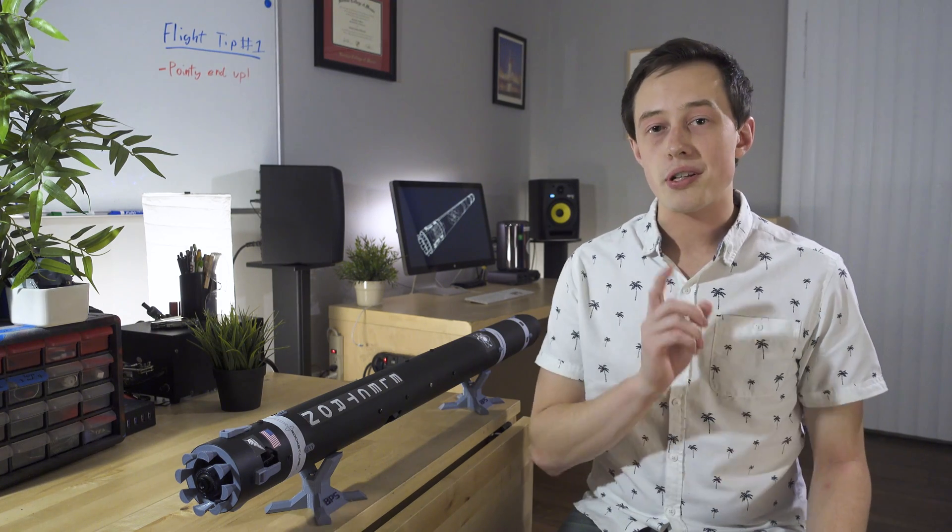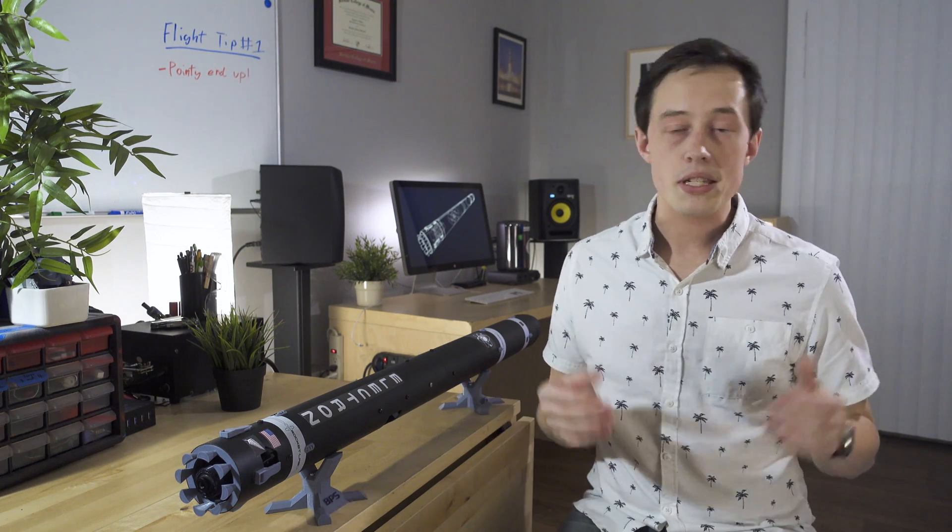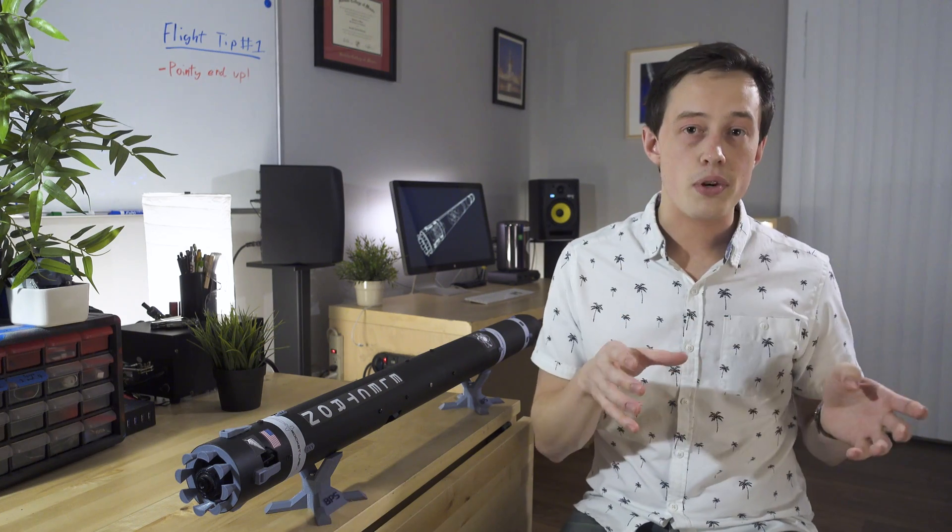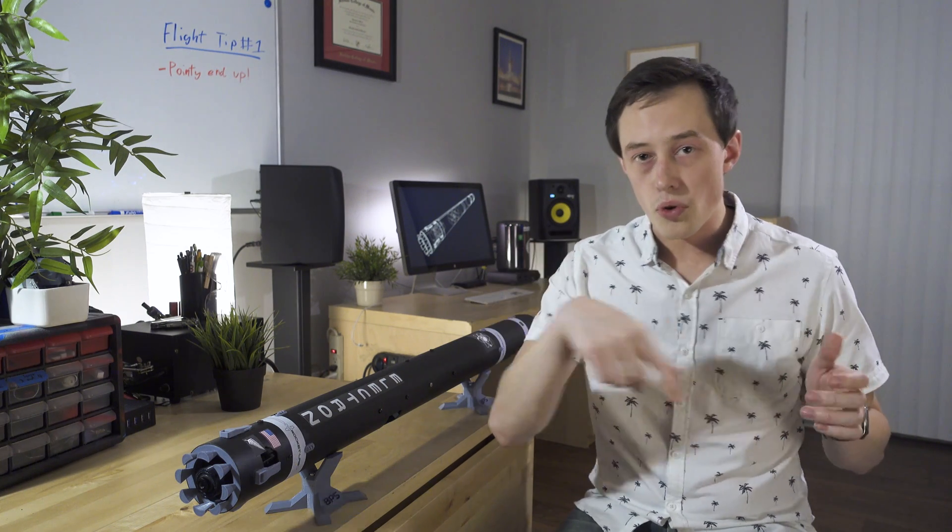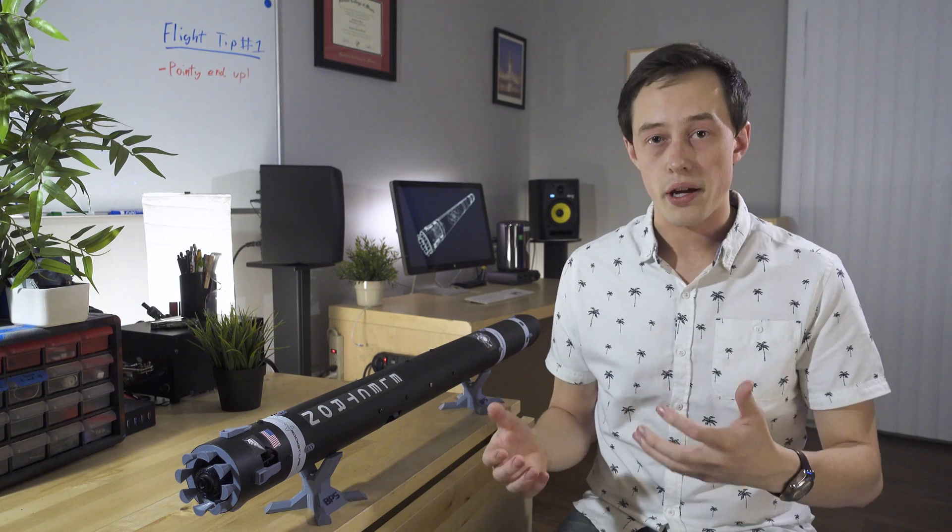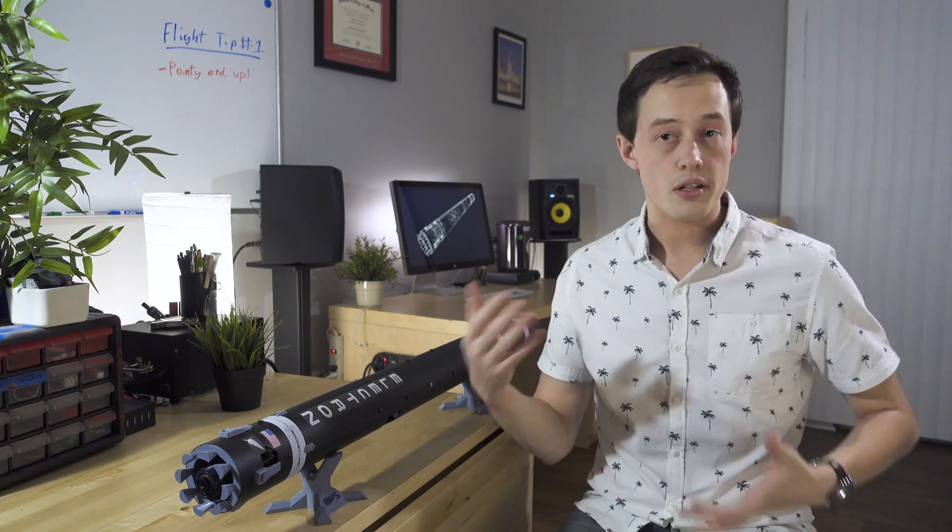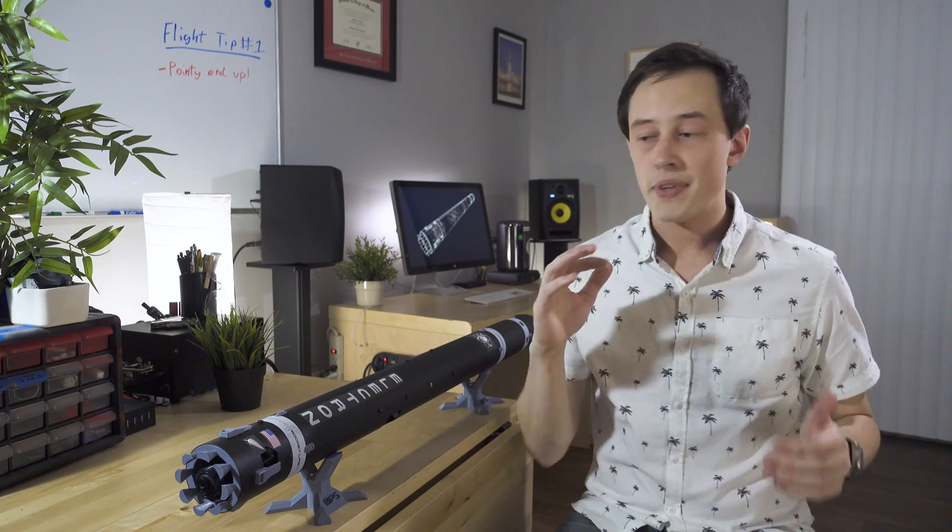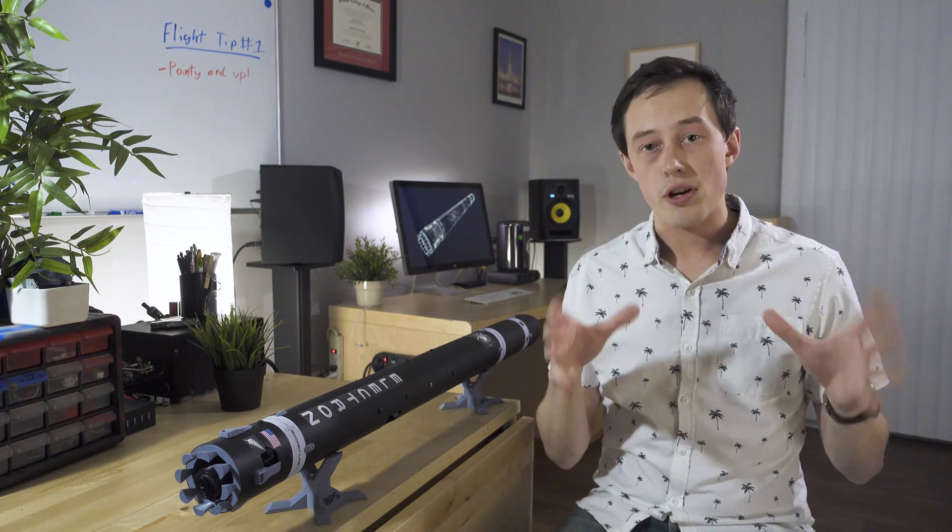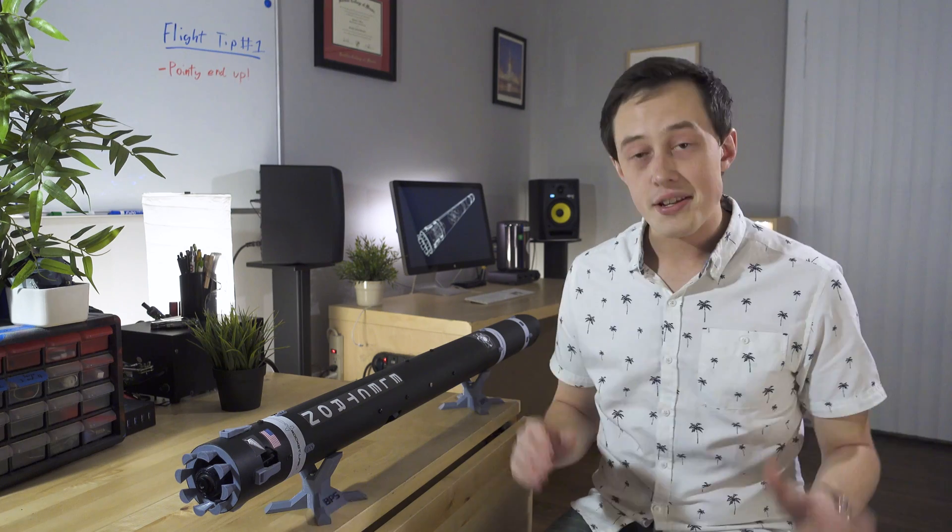Tip number one, don't use a launch rod, use a launch rail. The difference between a launch rod and a launch rail is that a rocket cannot roll around the rail, however it can roll around the rod. We want to minimize roll in the SignalR2 system because Signal doesn't control roll, it's just pitch and yaw. So to minimize this, make sure you use a launch rail if you're going to use one at all.